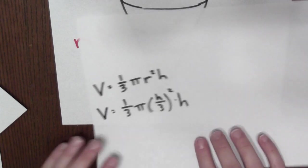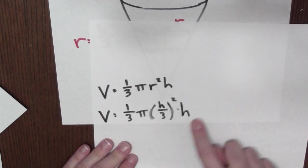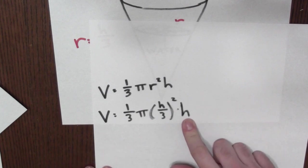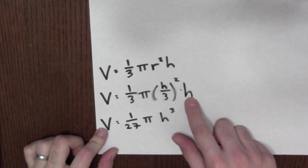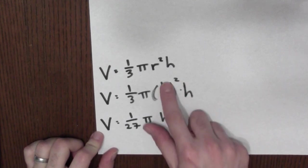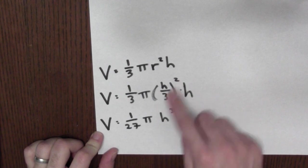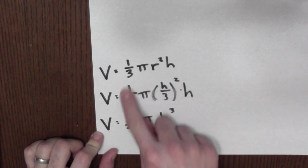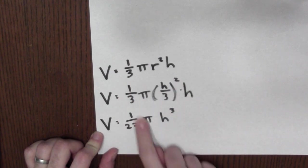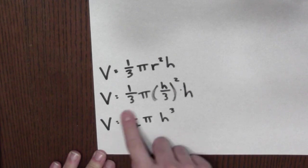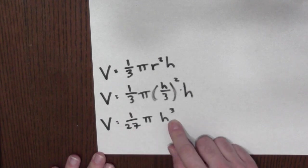That then lets me write down the equation for the volume of water just in terms of a single variable h. I can simplify this expression just a little bit. So I can combine the h² and the h to give me an h³. And the 1/3 squared becomes a 1/9, which combines with the 1/3 to give me 1/27. So the volume is 1/27 π times the height cubed.